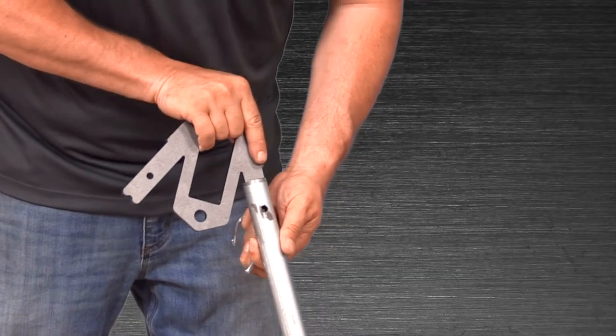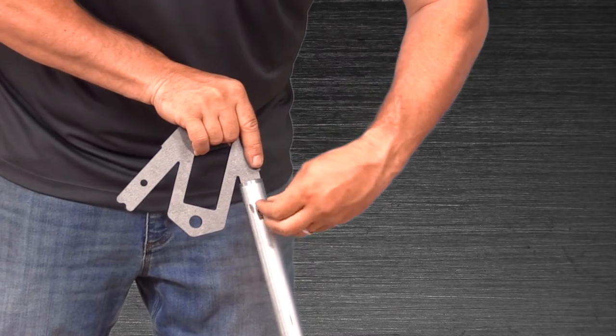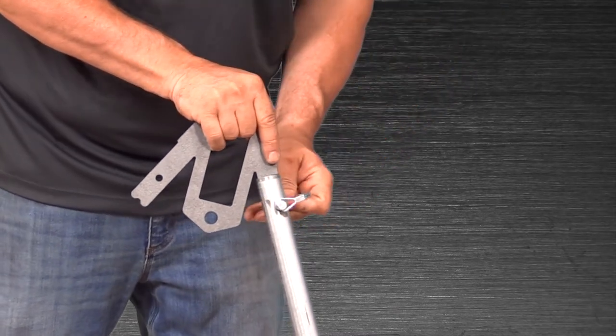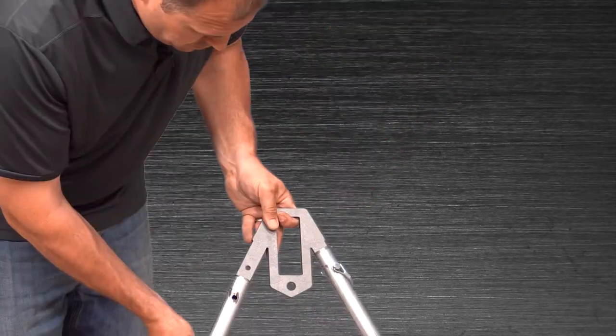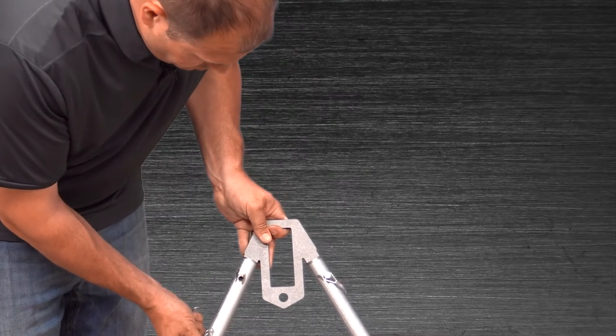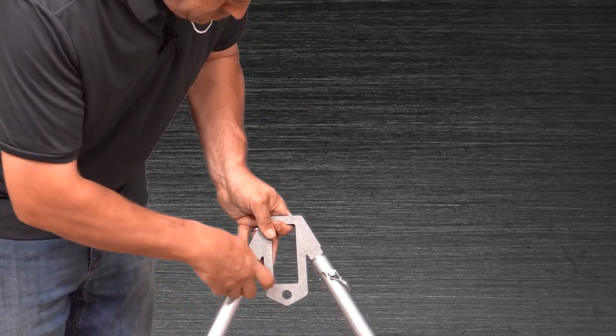Now you can set up the leg assemblies. Take one leg bracket and insert it into a conduit leg, aligning the holes and then securing with a pin. Repeat for the other leg. Repeat the process for the other leg assembly.